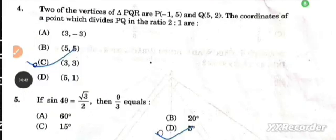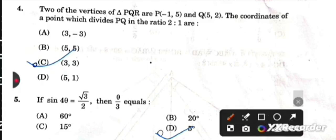Next question: Two of the vertices of triangle PQR are (-1, 5) and (5, 2). The coordinates of a point which divides PQ in the ratio 2:1 are (3, 3).